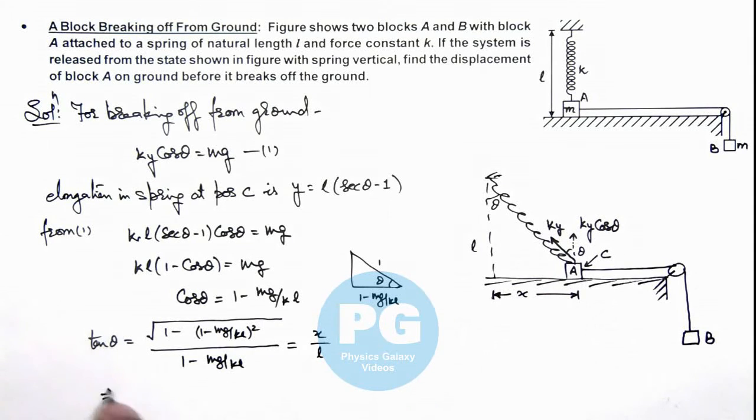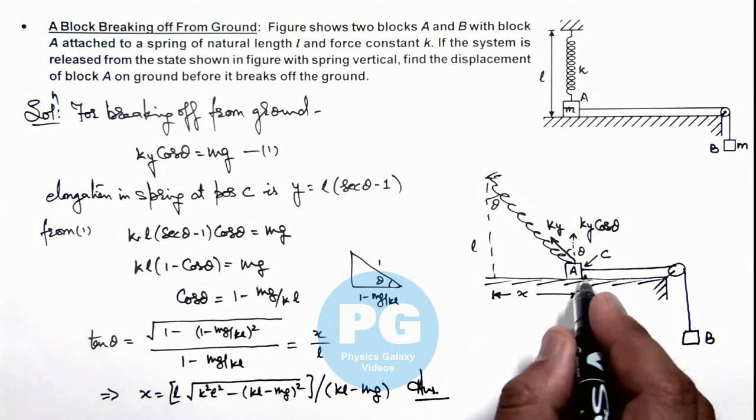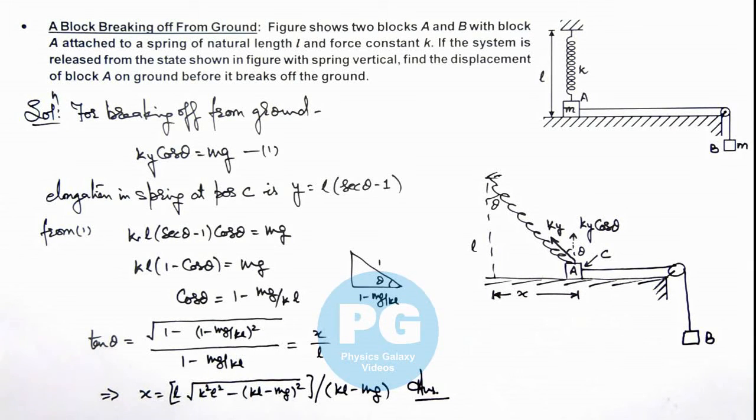So this gives us the value of x as l times tan theta, or further simplifying this will give us l under the root: k squared l squared minus (k l minus m g) whole squared divided by k l minus m g. So this is the final result of the problem, the displacement of block A when it breaks off from the ground.